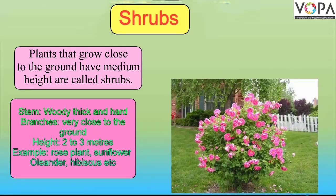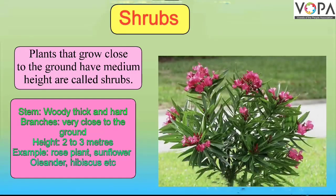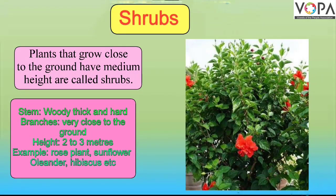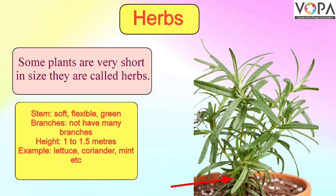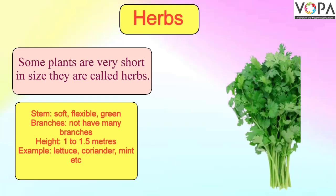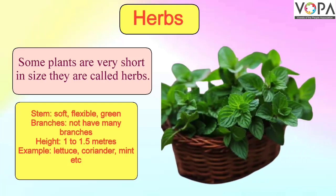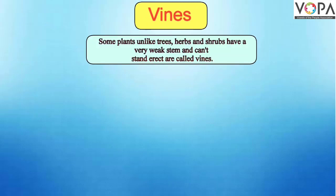For example: rose plant, sunflower plant, hibiscus, etc. Herbs: Some plants are very short in size — they are called herbs. The stems of herbs are green, soft, and quite flexible as compared to those of trees and shrubs. Herbs do not have many branches. Herbs grow up to 1 to 1.5 meters tall. For example: lettuce, coriander, mint, etc.